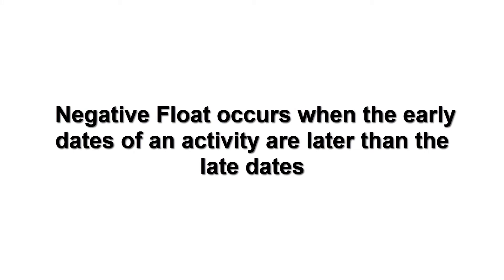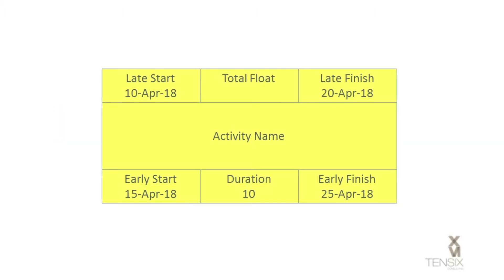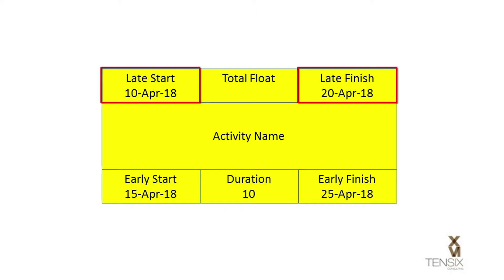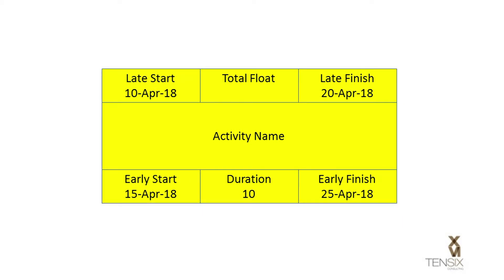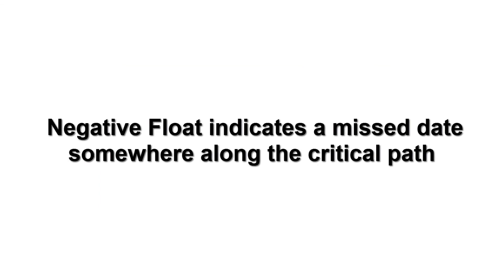Technically speaking, Negative Float appears in a schedule when the early dates of an activity are later than the late dates. If we look at an activity represented as a precedence node, we can see an example of a Negative Float condition. You can see in this example Activity node that the late dates are 5 days earlier than the early dates. In other words, during the forward and backward pass, the calculation revealed that the activity would have to start 5 days earlier than its earliest possible start date. In short, we've exceeded some important date along the critical path.